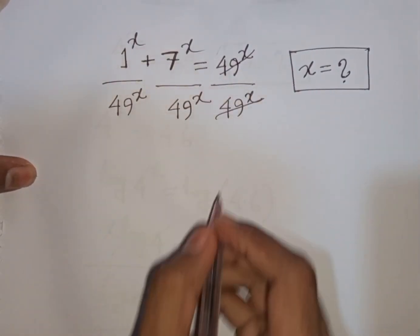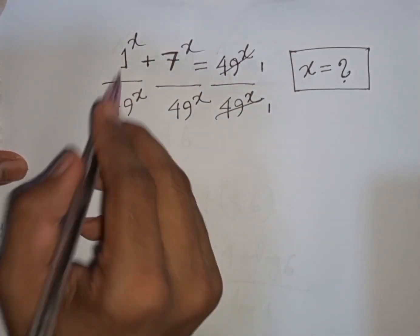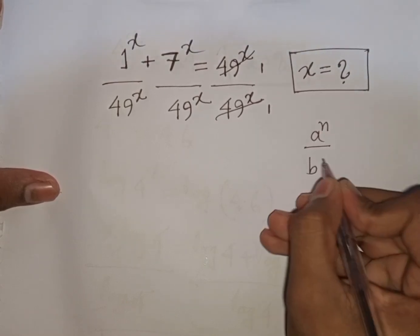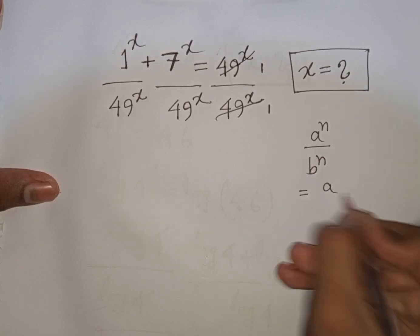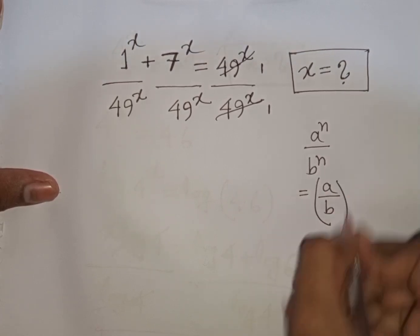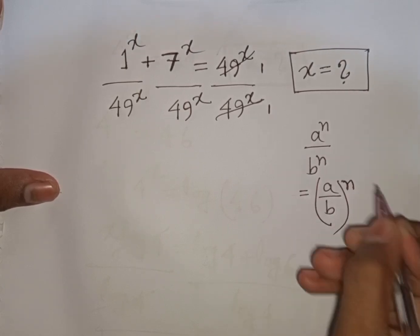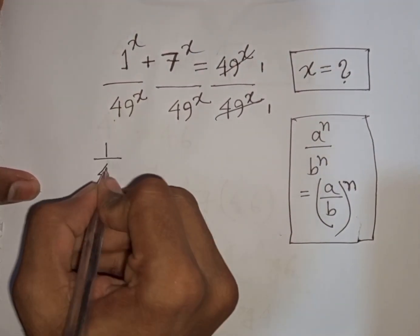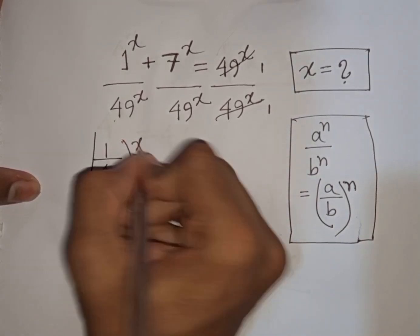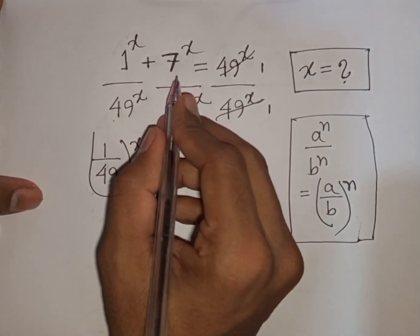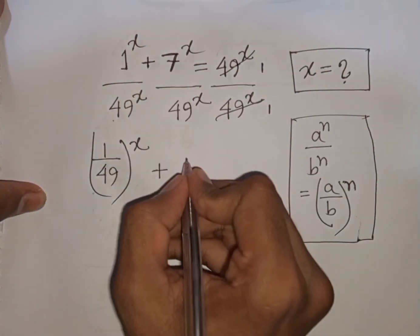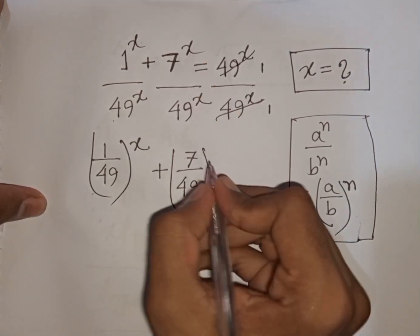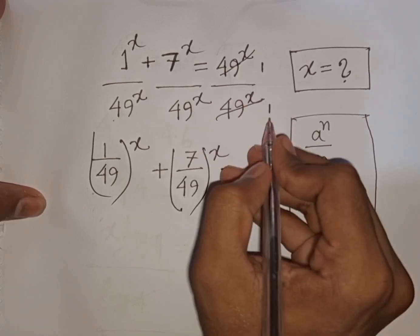After dividing by 49^x, the 49^x terms cancel. We now have same powers but different bases. Applying the exponential rule that a^n / b^n = (a/b)^n, we can write (1/49)^x + (7/49)^x = 1.